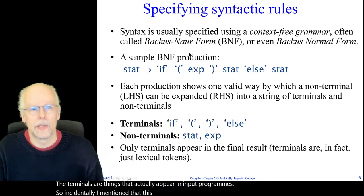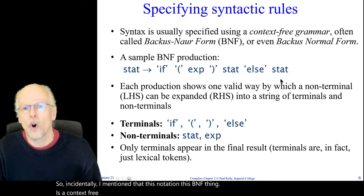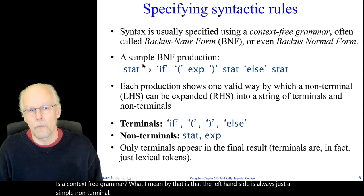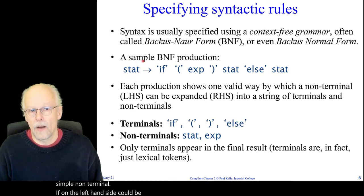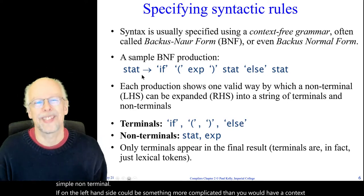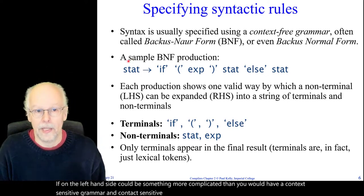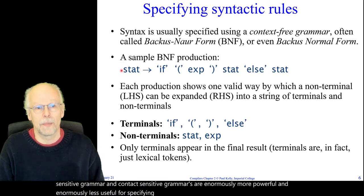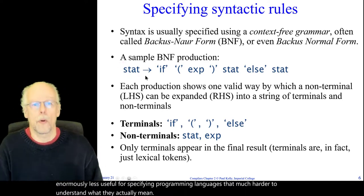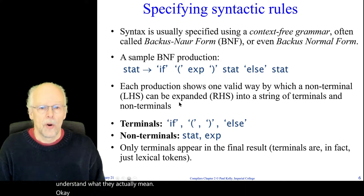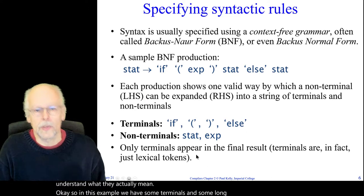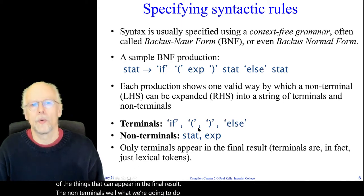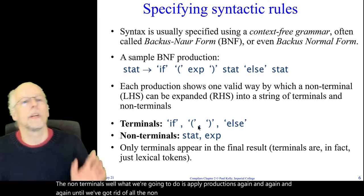This BNF notation is called a context-free grammar because the left-hand side is always just a simple non-terminal. If the left-hand side could be more complicated, you'd have a context-sensitive grammar. Context-sensitive grammars are enormously more powerful but also much less useful for specifying programming languages — they're much harder to understand. In our example, the terminals are things that appear in the final results; we apply productions repeatedly until we've eliminated all non-terminals.